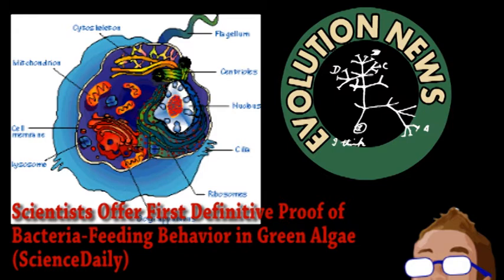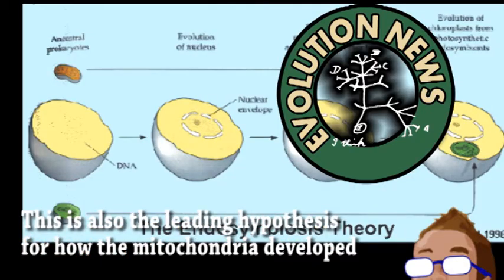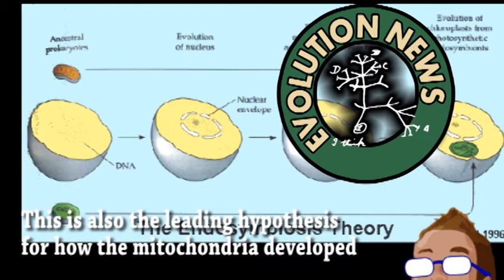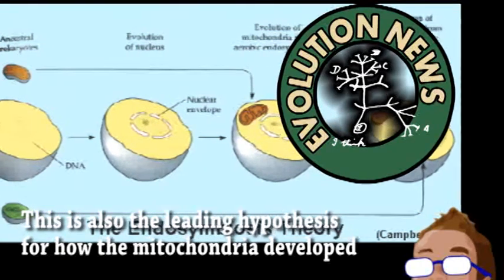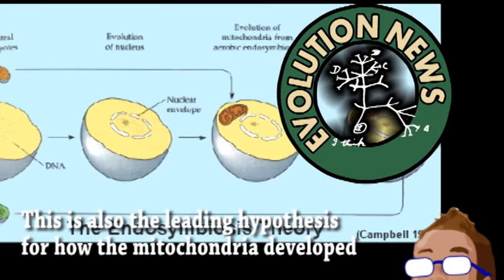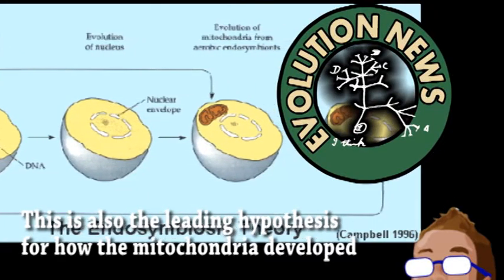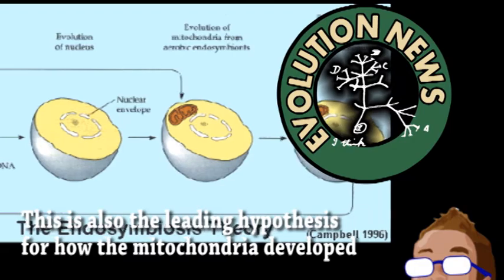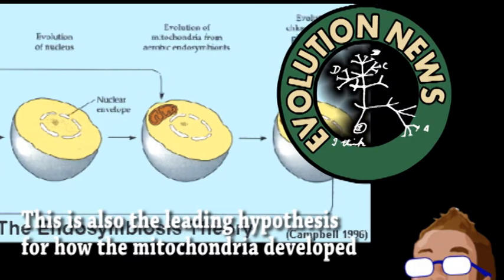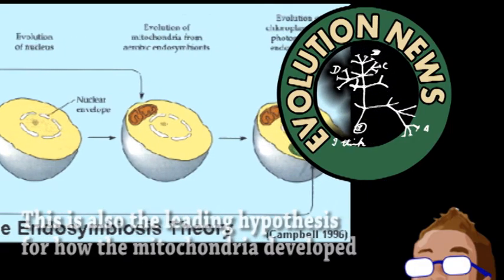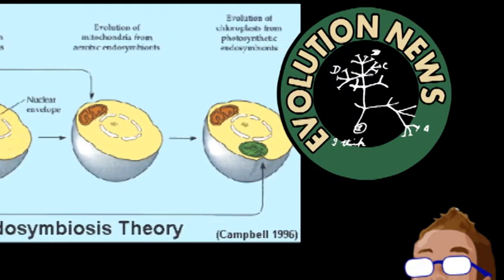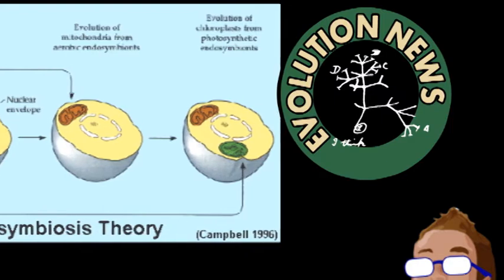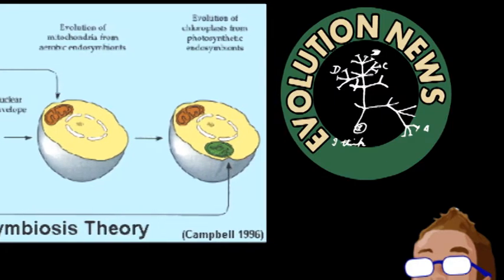The leading hypothesis for evolution of the chloroplast is called endosymbiosis, which suggests that an early eukaryotic organism simply absorbed a photosynthesizing cyanobacteria, and instead of digesting it, kept it around for the sugar it was producing. Even though this was the most likely idea, it had never been proven, and that's kind of an important thing in science. Now researchers working with the American University of Natural History have directly observed a modern eukaryotic algae absorbing and eating a bacteria.